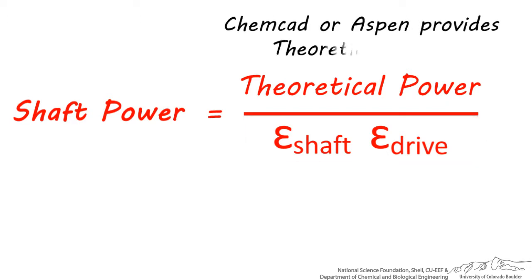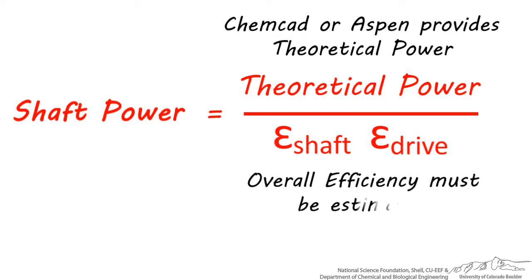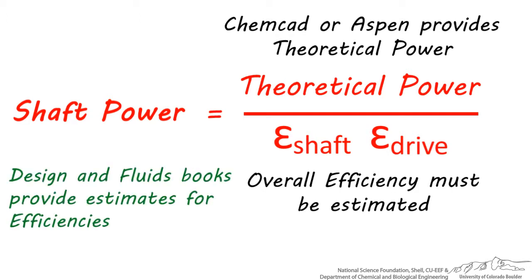While ChemCAD and Aspen do provide you with the theoretical power number, they will not calculate the shaft power for you. The reasoning behind this is that you must estimate the efficiency of the compressor or pump and the drive, because it can vary widely based on design specifications. You can estimate these efficiencies by looking at pump, turbine, and compressor efficiency tables in a fluids book, or you can use an estimate provided in a design book.